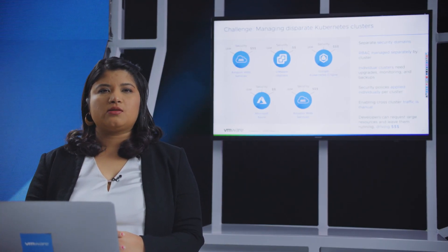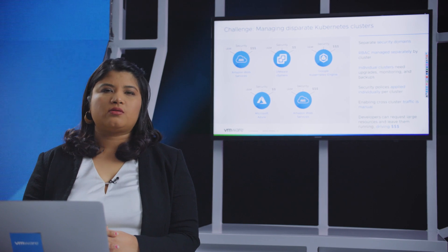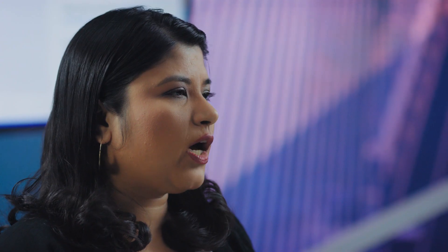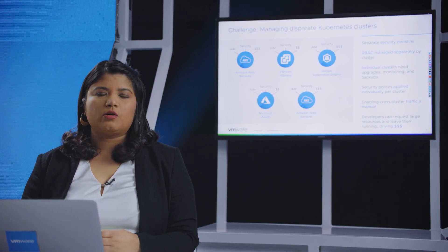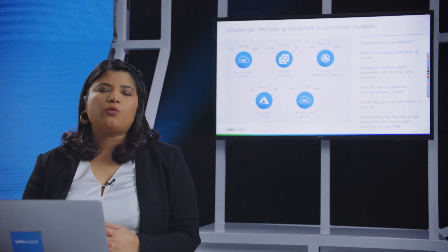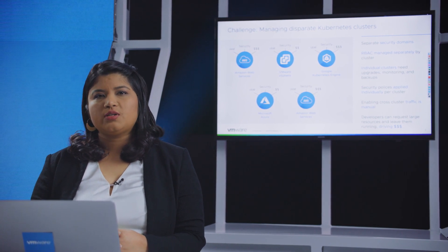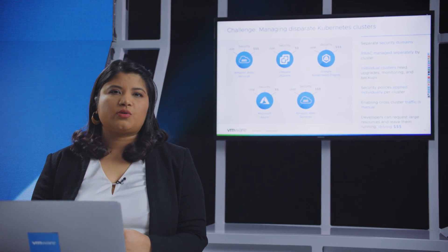On top of that, imagine having identity access into these individual environments for development teams in order to access the Kubernetes API. AWS has its own identity and access management, Google will have its own, vSphere has its own. So how do operation teams manage identity and access management into these different environments? At the same time, development teams also need self-service access into these environments or the API. They don't really want to wait to get to IT or operation teams or file a ticket just to get API access into these environments.